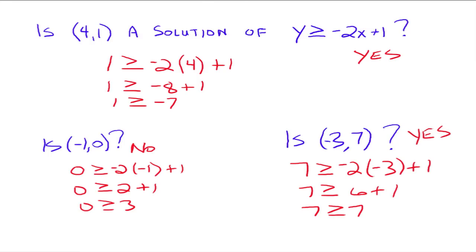If it was strictly just greater than, then no, this would not have been a solution, because 7 is not strictly greater than 7. But 7 is greater than or equal to 7, so it qualifies.